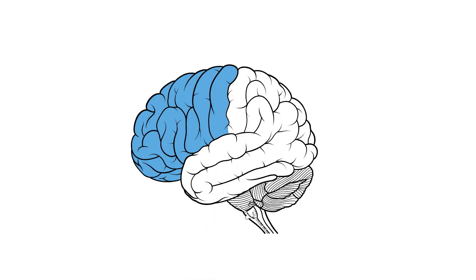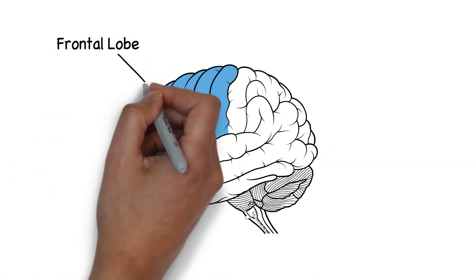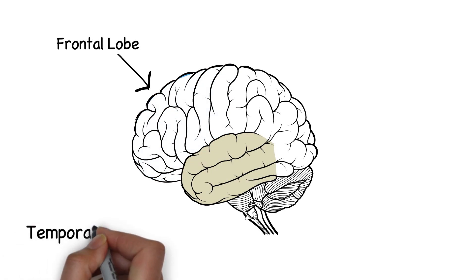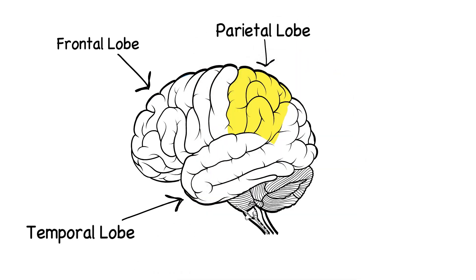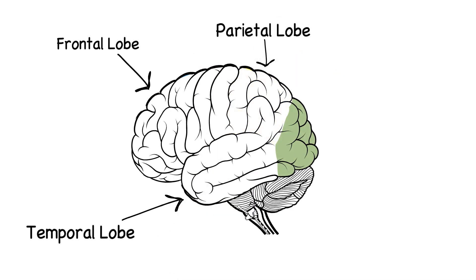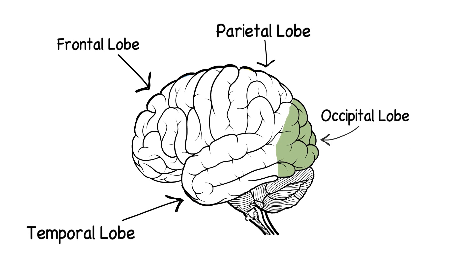At the front is the frontal lobe. Below the lateral sulcus is the temporal lobe. This is the parietal lobe, and right at the back is the occipital lobe.